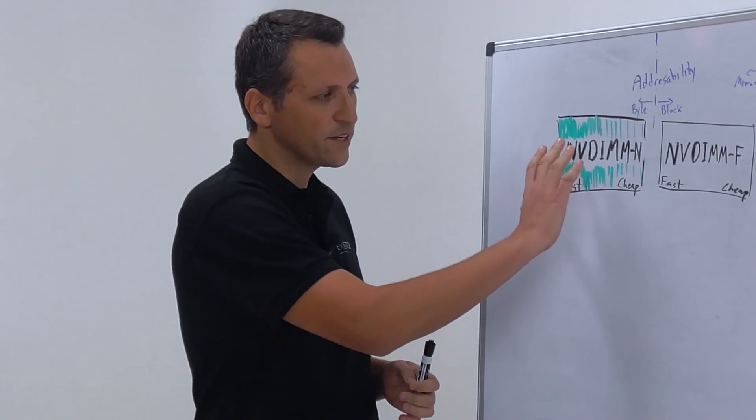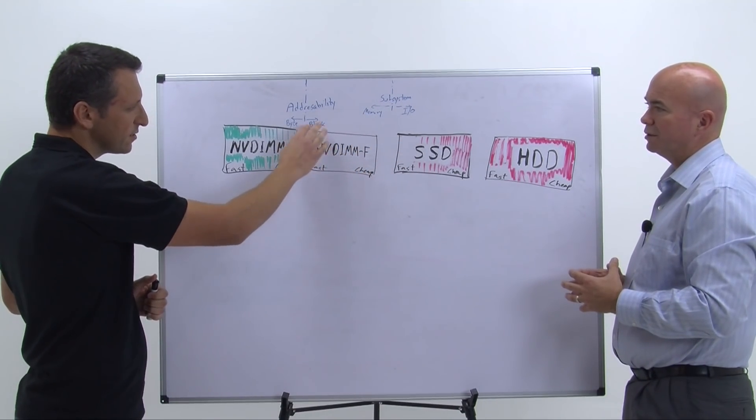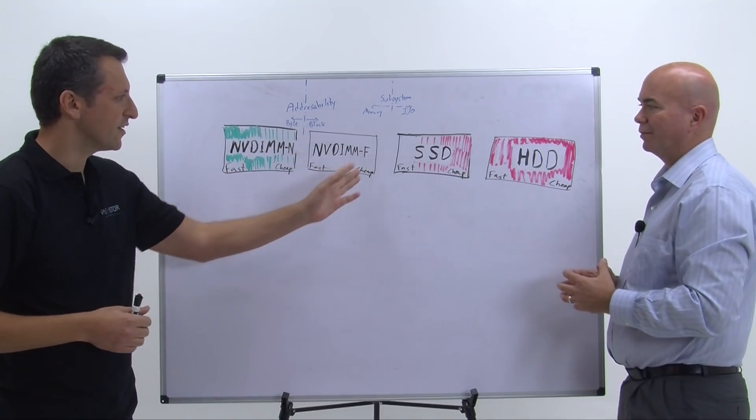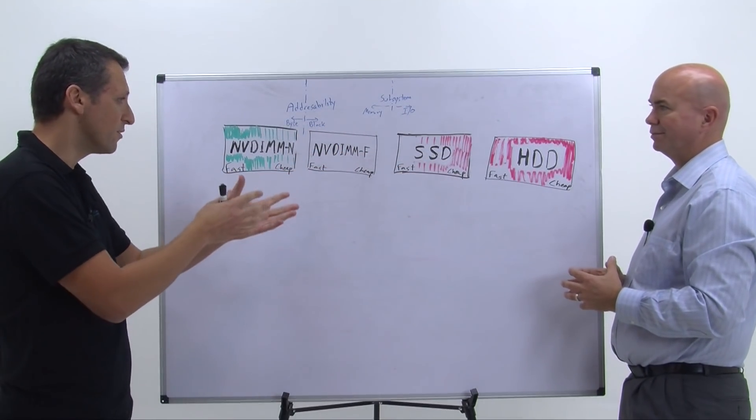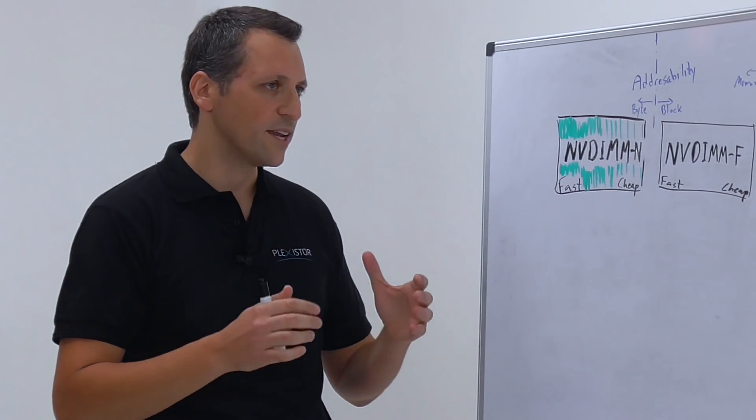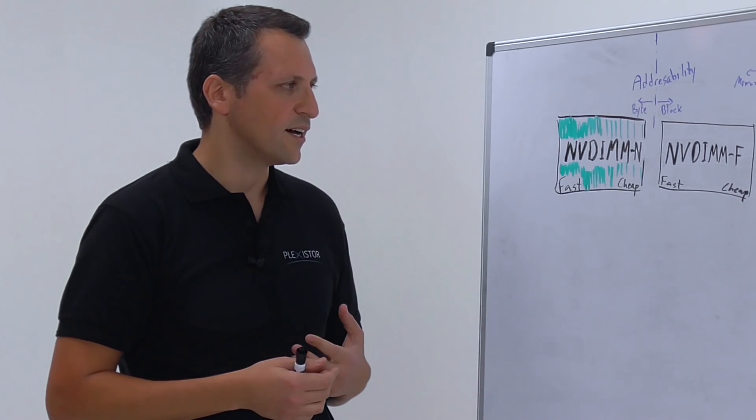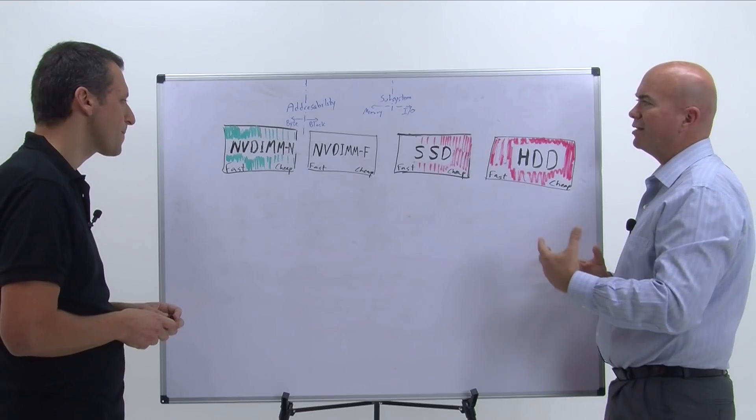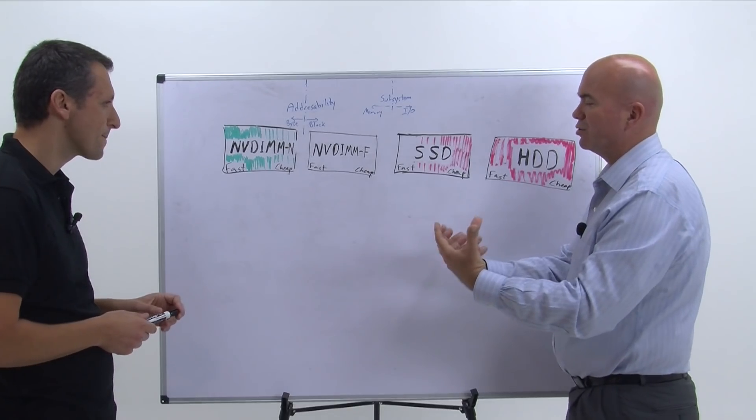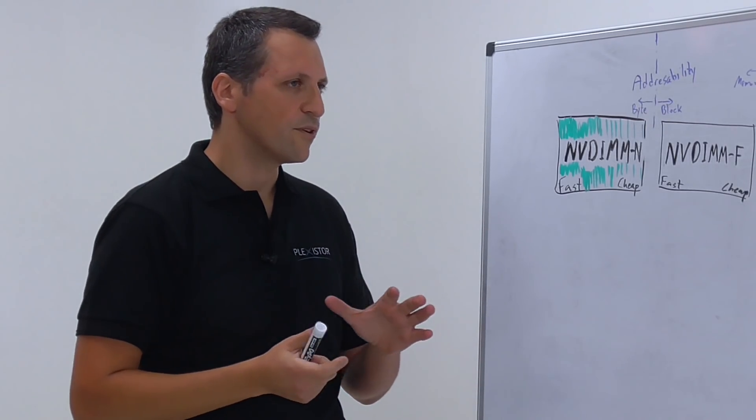So you're not, well, depending on the case, right, you have NVDIMM F, which is F for Flash, and that's still a block-based storage device just like SSDs and hard drives, just in a better location. Right. And then you have NVDIMM N, which is byte addressable and maps to the address space that the application can approach without any software in between. And so what's the advantage of being byte addressable? Is that an efficiency thing?